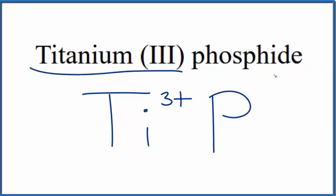And because titanium is a transition metal and this phosphide, phosphorus, is a non-metal, we're going to think about the charge.